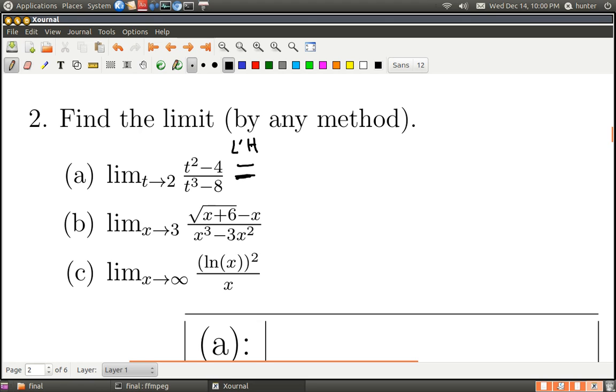So L'Hopital's rule says that I can just take the derivative of top and bottom of the limit as t goes to two. What's the derivative of the top? It's two t. And what's the derivative of the bottom? It's three t squared. We could cancel the t at this point, but we don't even have to because we're now able to just plug in two. What happens if I plug in two? I get four on top and twelve on the bottom, and so the answer is one-third.